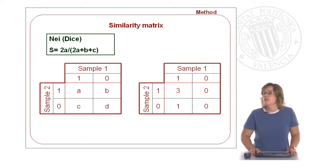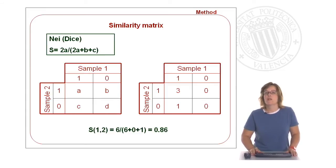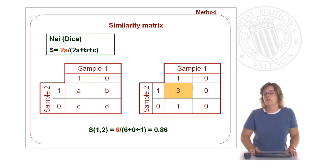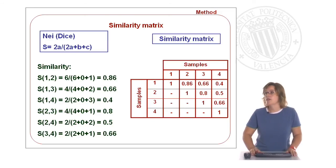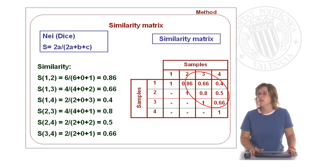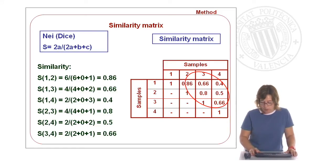How can we use this formula with our samples? The similarity between samples one and two will be twice the bands which are common, divided by twice the bands which are common plus the bands which are present in one sample and not the other. We apply this similarity calculation among each pair of samples and we get a matrix which has just the comparison between pairs of samples.